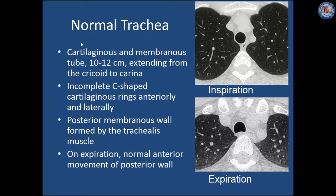An understanding of the normal trachea is important for tracheal diagnosis. The trachea is a cartilaginous and membranous tube approximately 10 to 12 centimeters in length that extends from the cricoid to the carina. It is comprised of multiple C-shaped cartilaginous rings that form the anterior and lateral walls. The posterior wall is a membranous structure formed by the trachealis muscle, and on expiration the membranous trachea will invaginate into the lumen.